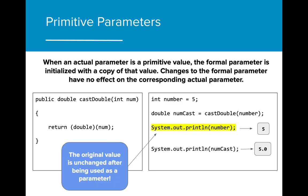We see that the initial value of number is unchanged, even after castDouble is called on number, because a copy of the value is passed to the method, not the actual variable number.